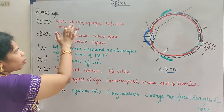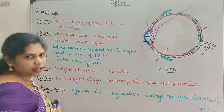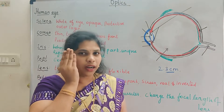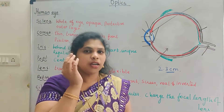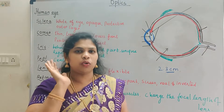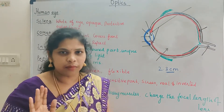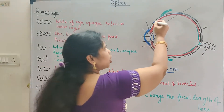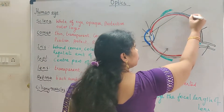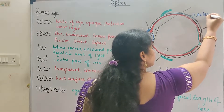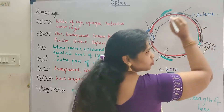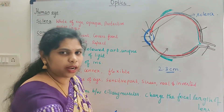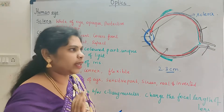The sclera is nothing but the white of the eye. So the eye circles — the eye is clear. It is the outer layer, and the outer layer we are going to make white in color.